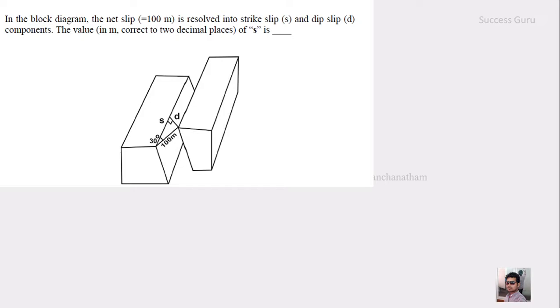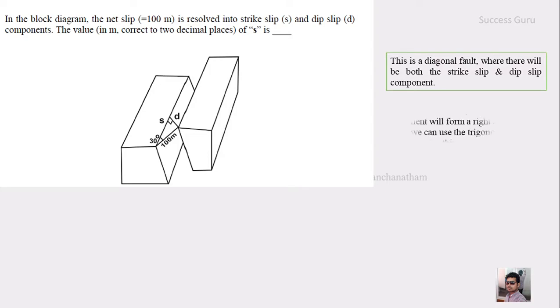And the next question is that they had given a diagonal fault and they had given the net slip that is of 100 meter and we have to resolve it into strike slip and dip slip and we have to mention the value of strike slip. So in a diagonal fault, we know that there will be both the component, that is strike slip and dip slip. As in diagonal fault, the displacement forms at right angle triangle. So we can use the trigonometric functions to solve this.